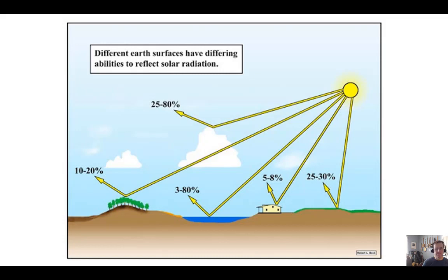Different surfaces have different abilities to absorb shortwave radiation from the sun. You can see water and green vegetation, forests, all different. We need to take that into consideration.